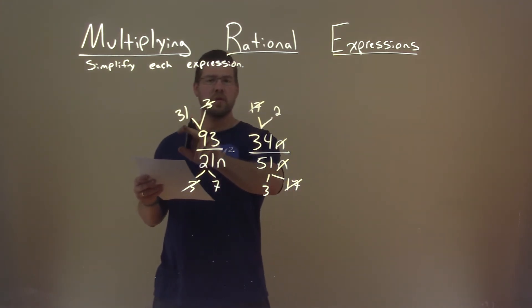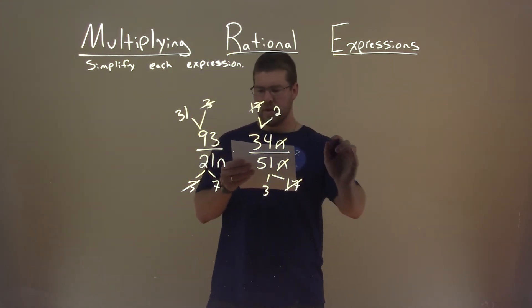So we're going to multiply across the numerator. 31 times 2 comes out to be 62.